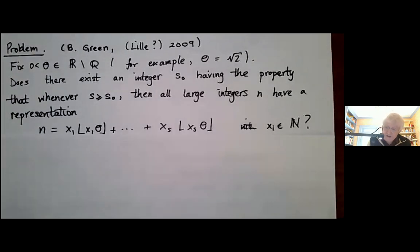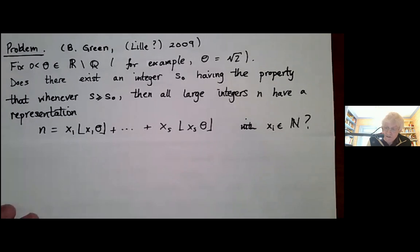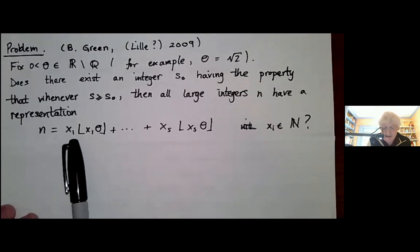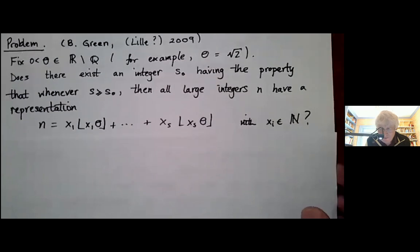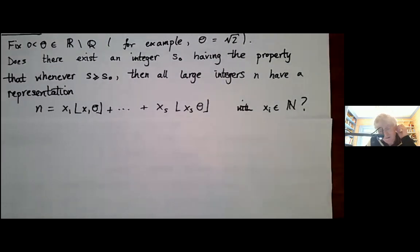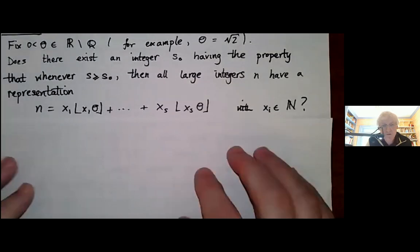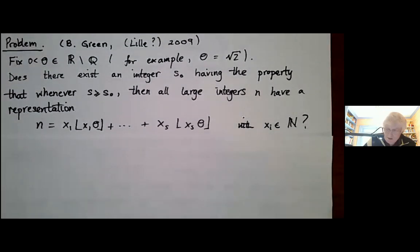To make this interesting, it's best to keep that real number θ positive and irrational, say, with θ equal to √2 as a special case. Can you find an integer s₀ having the property that whenever you have at least s₀ variables, then all large integers n have a representation as a sum of s values of this bracket quadratic polynomial? That's the problem. You can imagine all kinds of variants of this problem, and I'll say something about some of the variants later on.